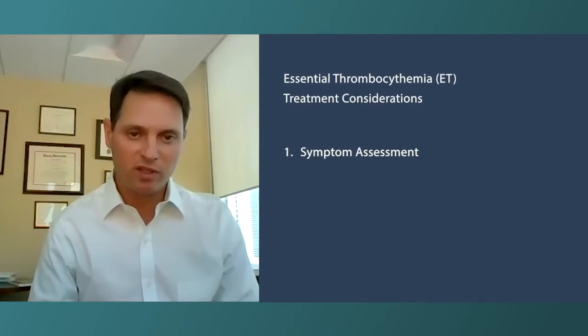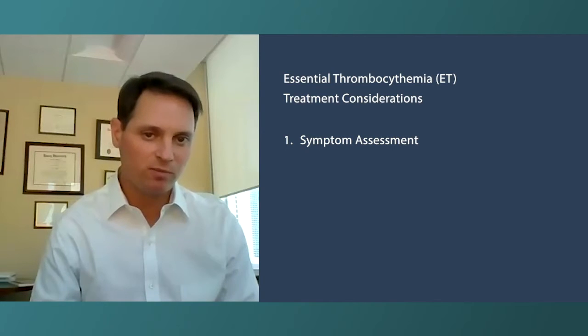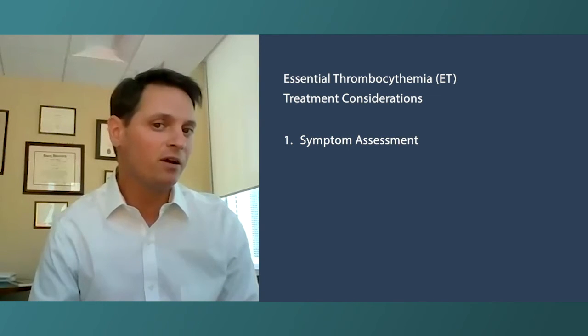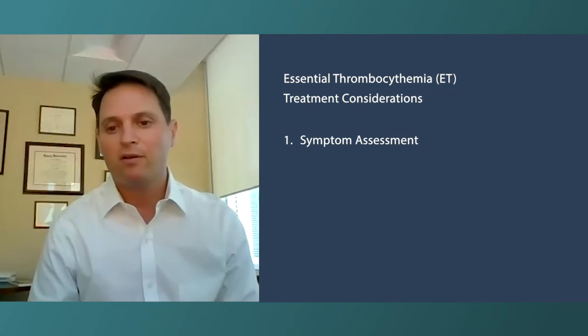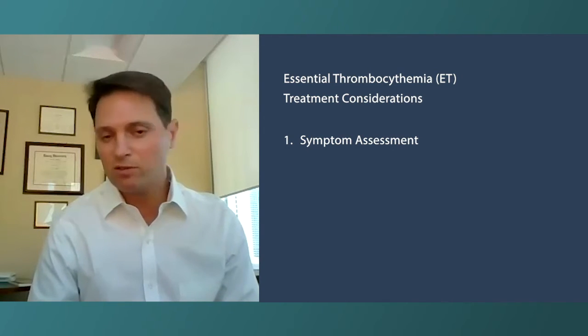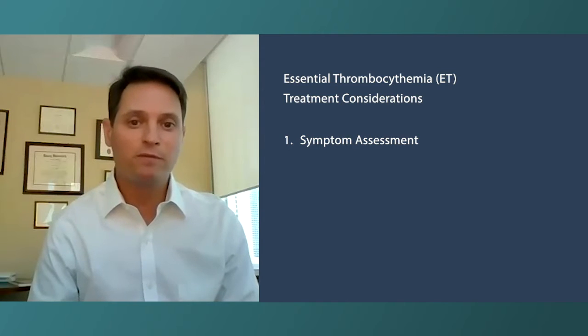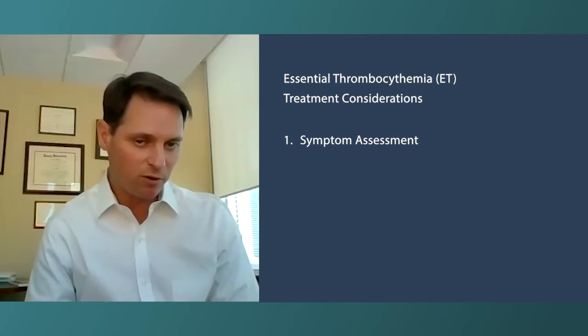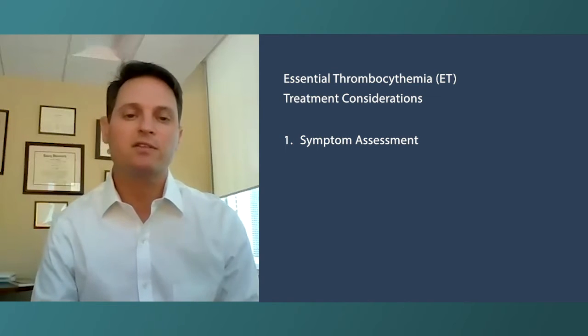Let's start with essential thrombocythemia, or ET. The first thing is taking an inventory of symptoms, seeing how symptomatic the patient might be. There are some patients who are asymptomatic or have few symptoms — they were told of a high platelet count during a routine visit. Some patients can be observed if they have few symptoms, especially if they fall into a lower vascular risk category.